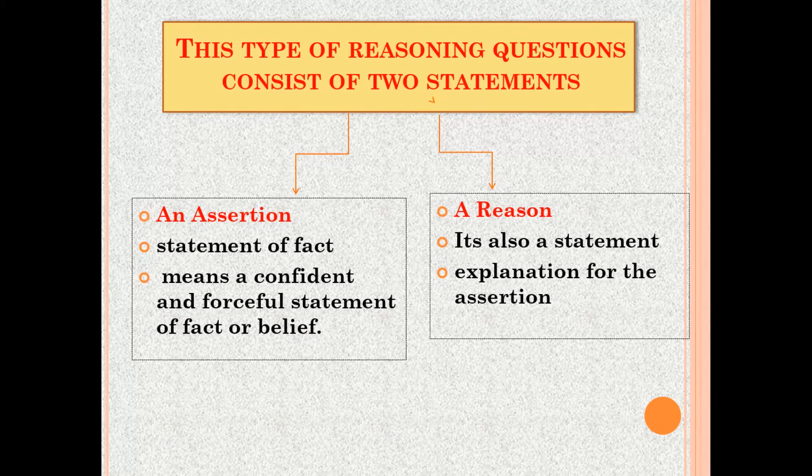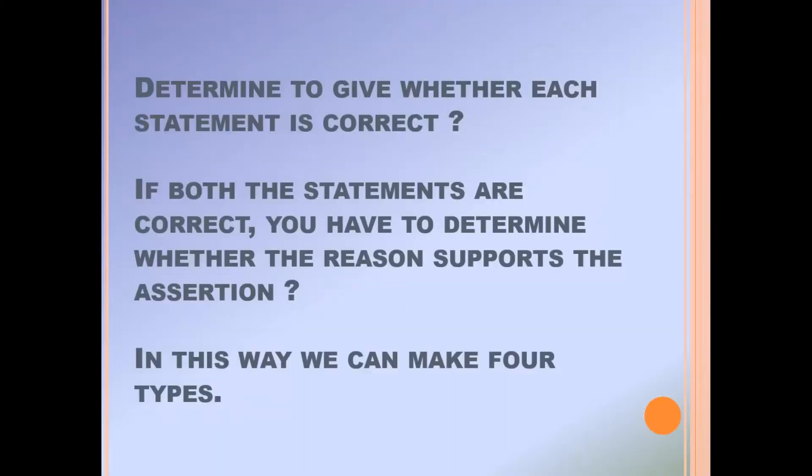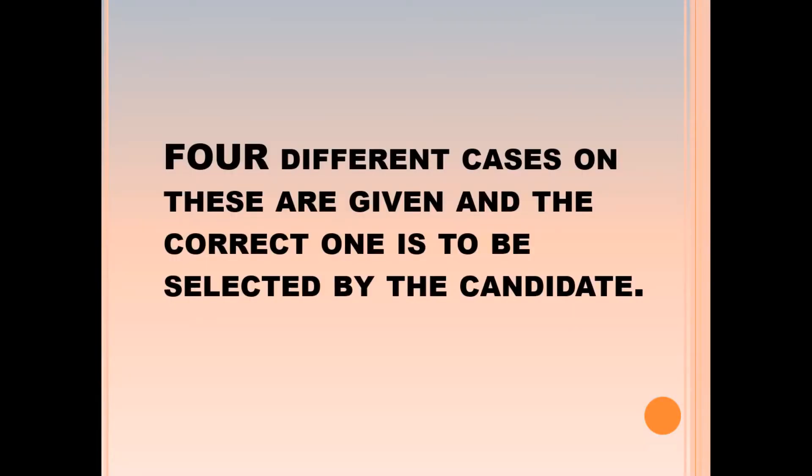Now, assertion reasoning questions consist of two statements. One is known as assertion and one is reason. Assertion is a statement of fact, a forceful statement of fact or belief, whereas reason is an explanation for the assertion. Determine whether each statement is correct. If both statements are correct, you have to determine whether the reason supports the assertion.